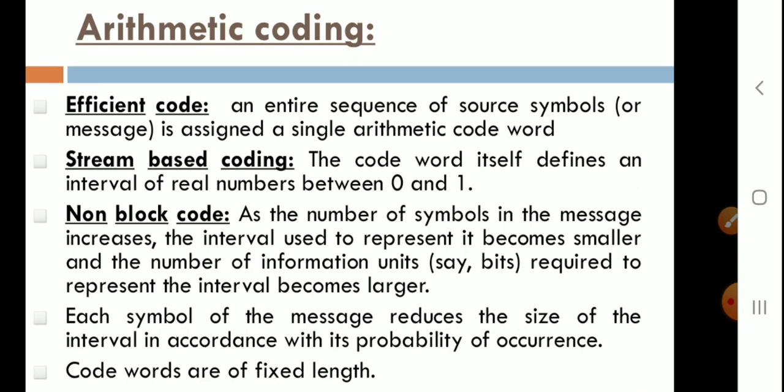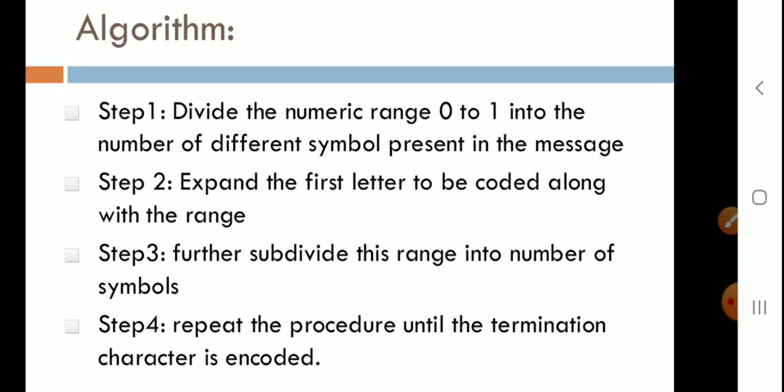The code words are of fixed length. The algorithm for arithmetic coding works as follows: in the first step, if symbols are given then the probabilities will be given, and we divide and specify the range from 0 to 1 to represent the entire message.